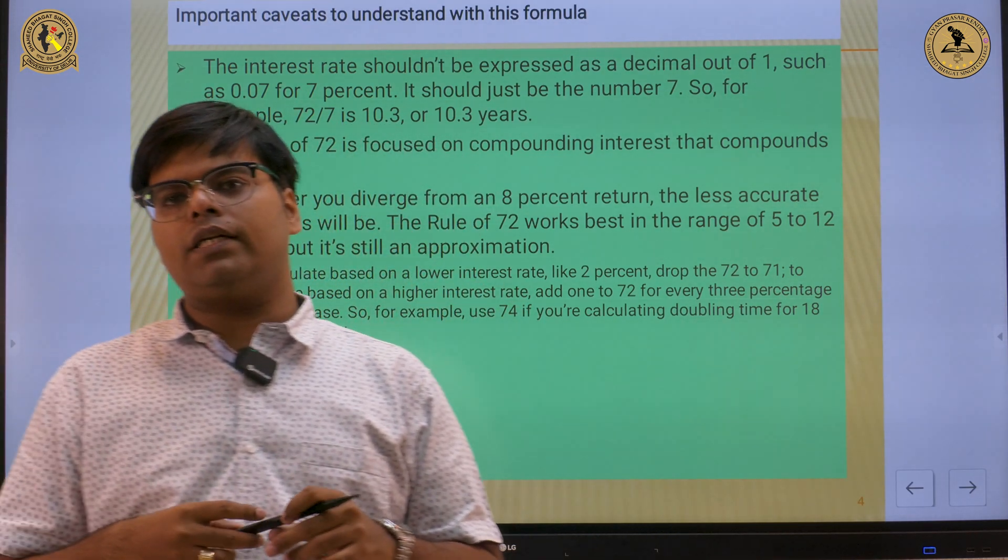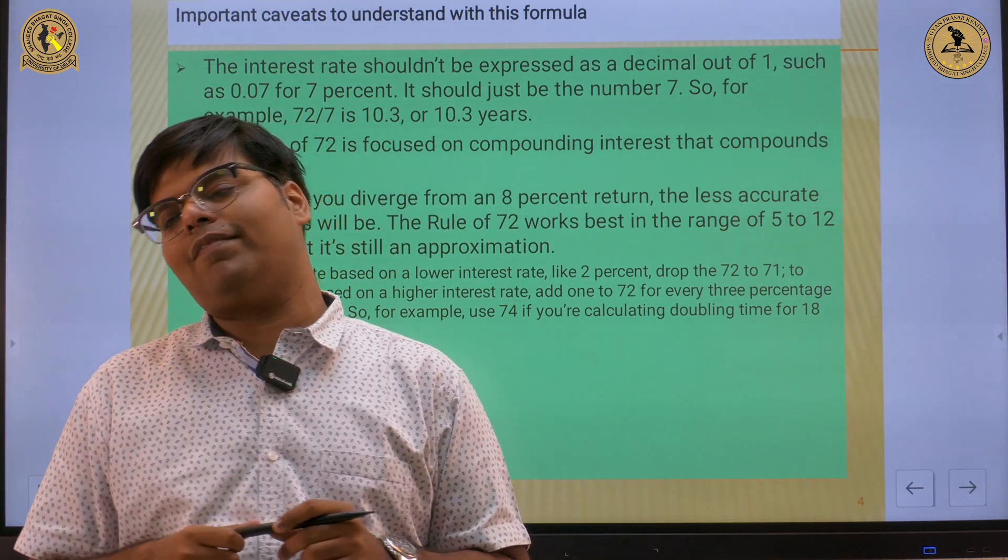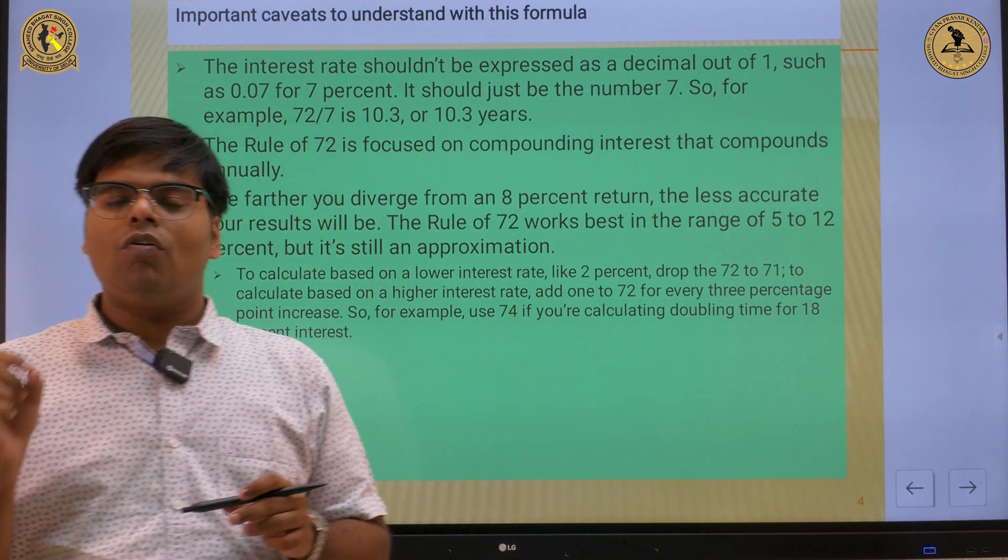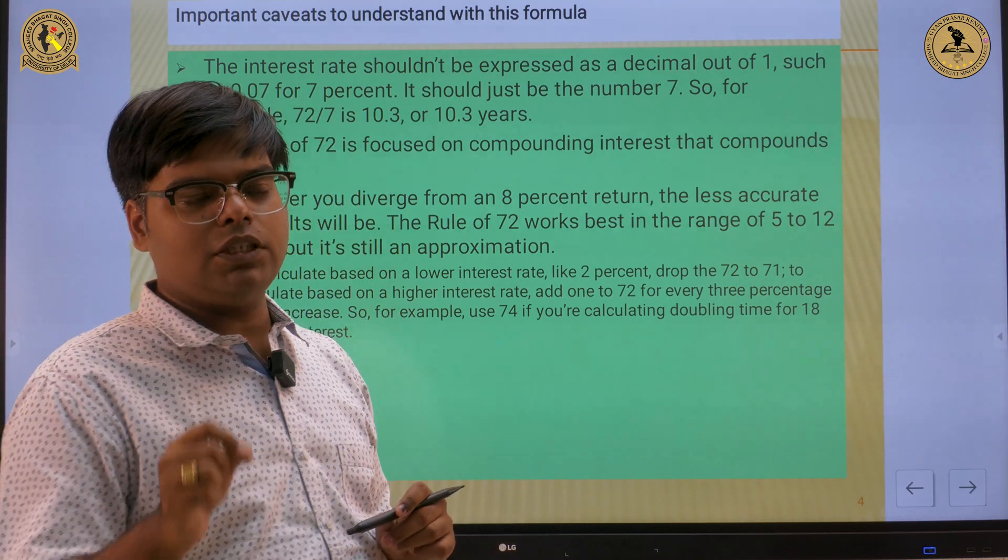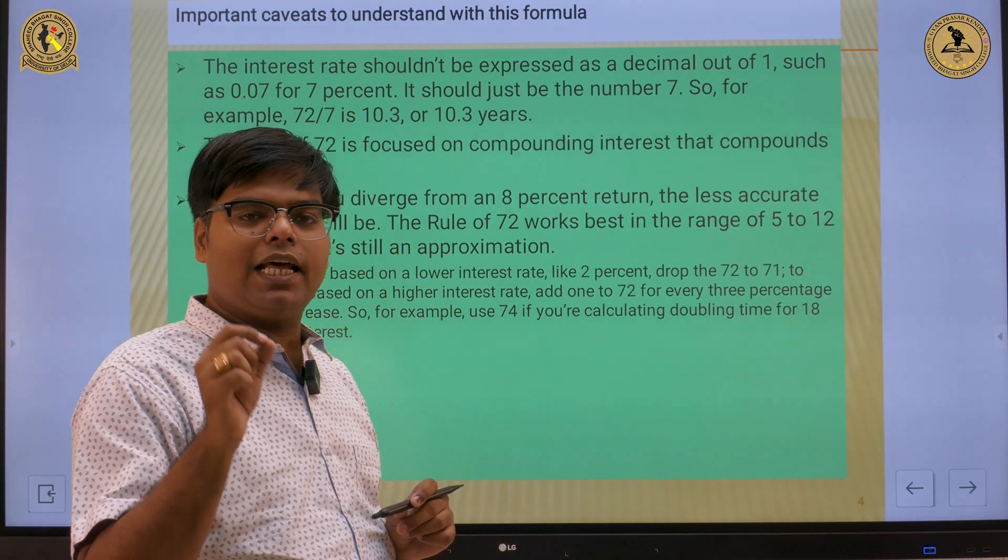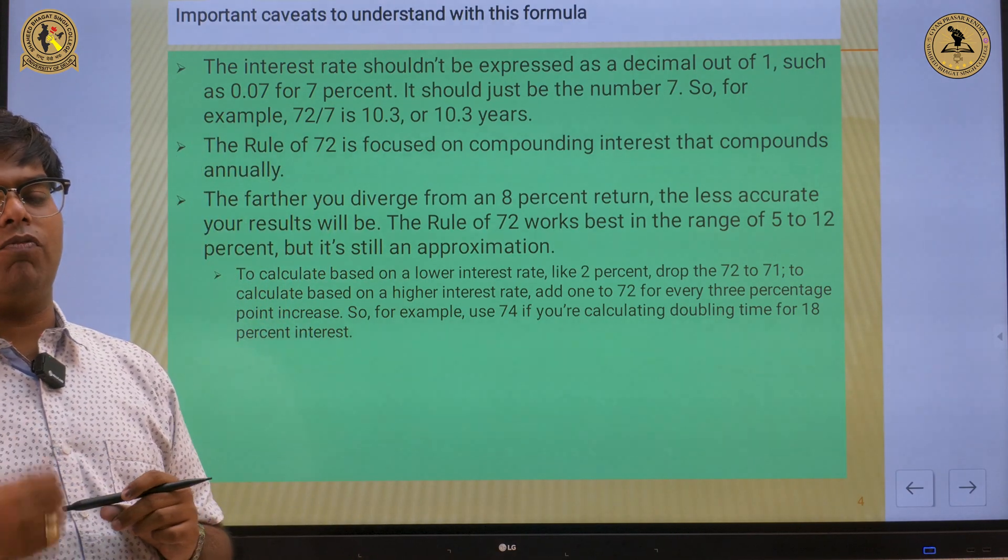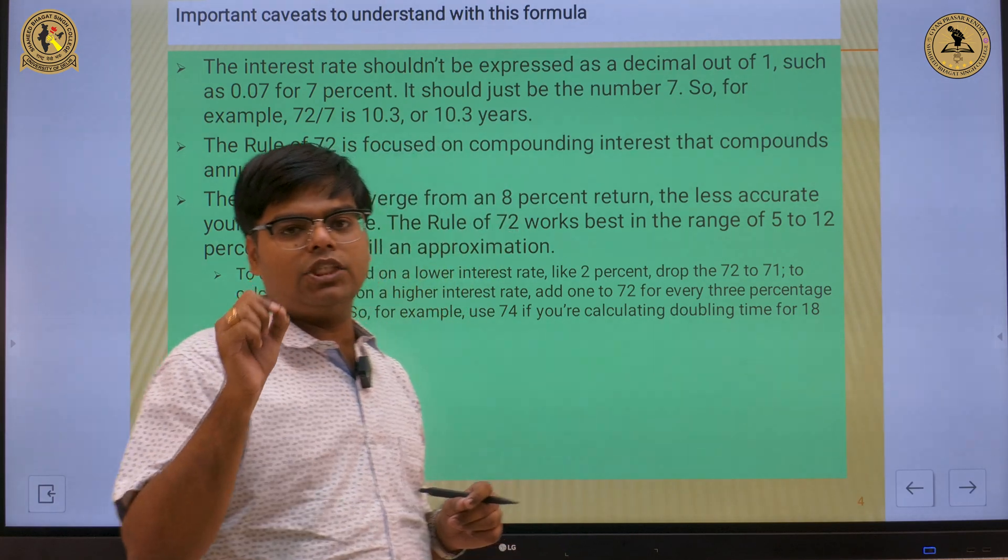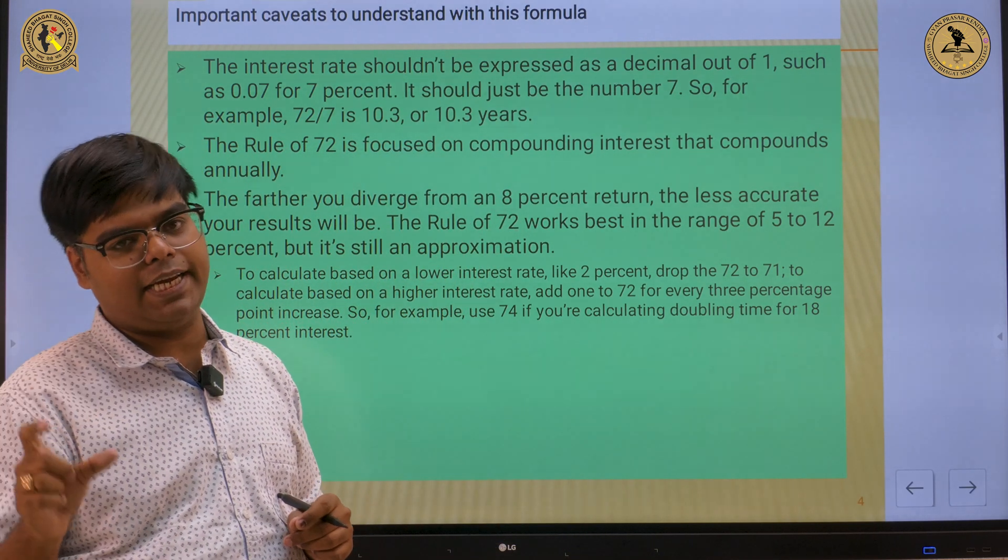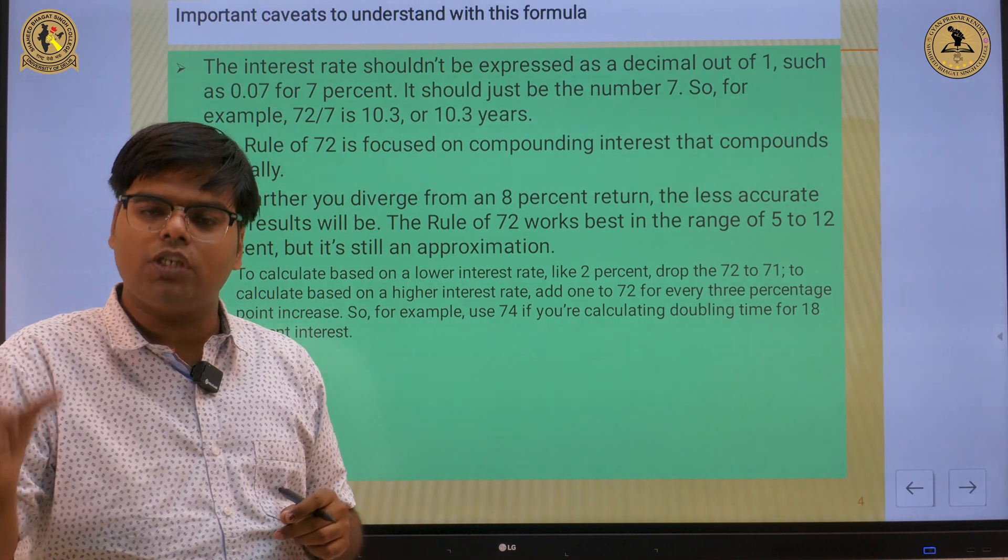Now there are three important considerations in this rule of 72. Number one: for making this rule of 72 applicable, you always need to take the interest rate in a numeric form and not in the decimal form. So if I am saying it is 8%, then it should be a single digit, that is 8, and it should not be 0.08.